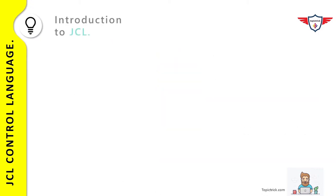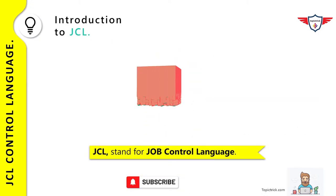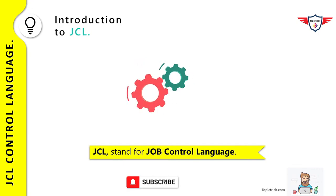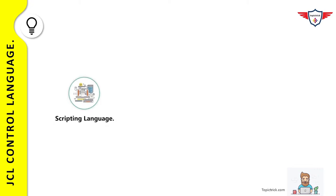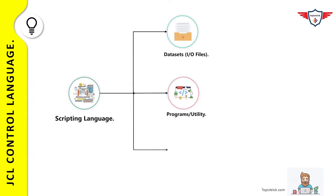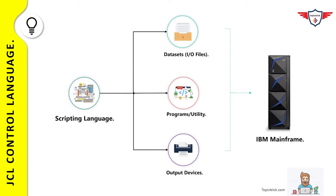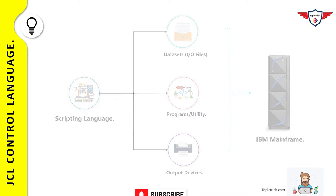The term JCL stands for Job Control Language, and it is primarily used on the IBM mainframe to convey information to the z/OS operating system through a set of statements called Job Control Statements. JCL is a scripting language — one of the oldest and most robust scripting languages. The purpose of JCL is to provide information related to the program, data set, and the input-output devices to be used during the execution of a job. Before discussing the different categories of job control statements, let's understand the different stages of JCL.